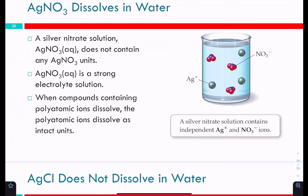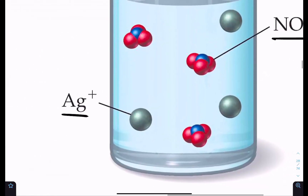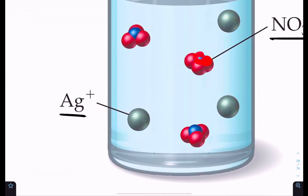Silver nitrate is another ionic compound that dissolves in water — it's ionic because it starts with a metal — and it completely dissociates, making it a strong electrolyte solution. What's special about silver nitrate is that we have individual nitrate ions, which are polyatomic ions. When you put silver nitrate into solution, the nitrate polyatomic ions stay together as a unit — they don't split apart from their oxygen atoms.